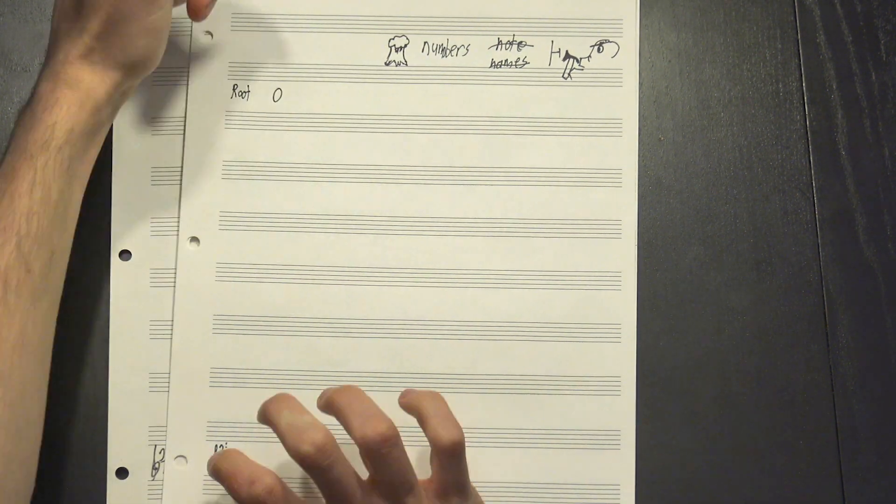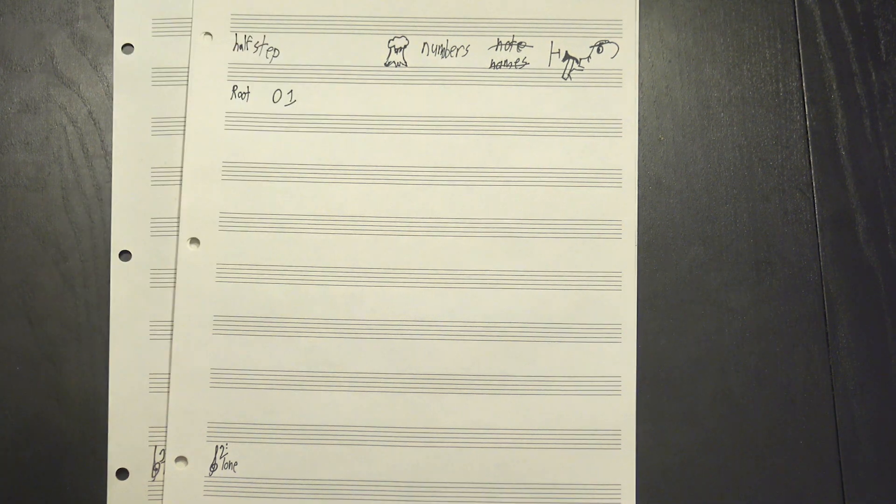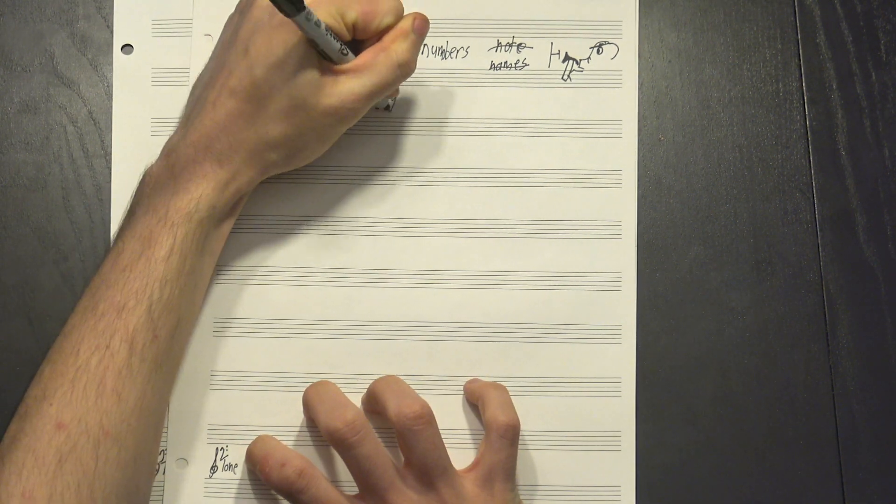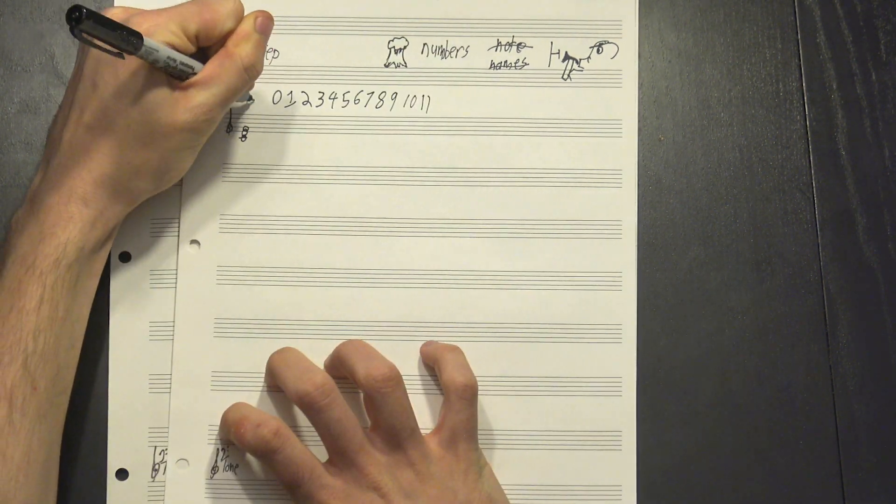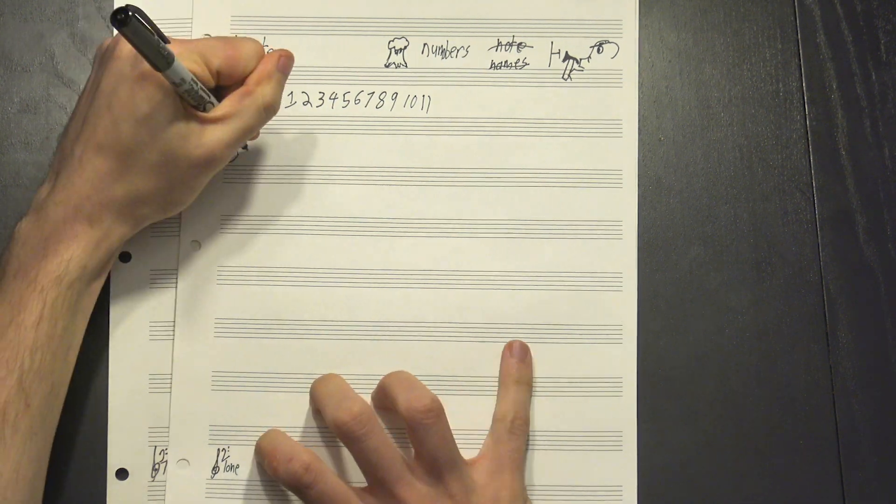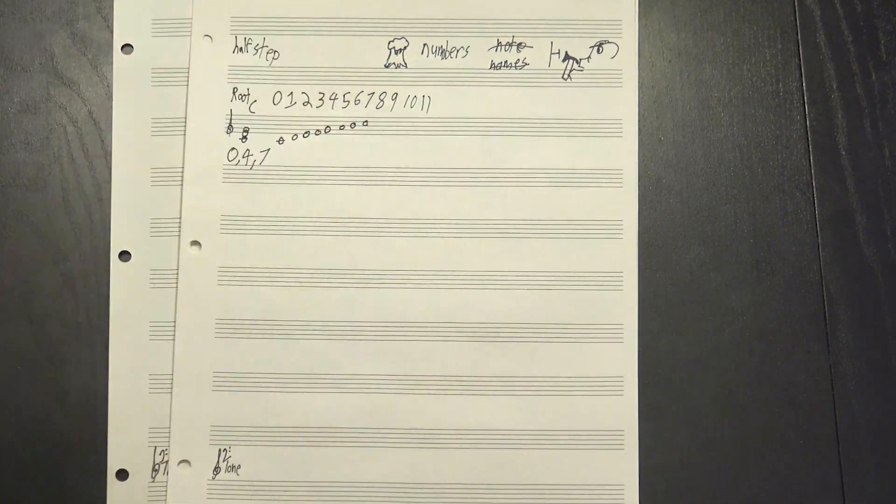Instead, we convert them into numbers, which tell you how far above the set's root each note is. So the root itself is zero, a note a half-step above it would be one, then there's two, three, and I suspect you've picked up the pattern by now. A major triad, for instance, consists of a zero, a four, and a seven, while the major scale looks like this.